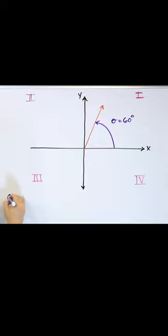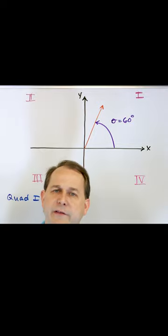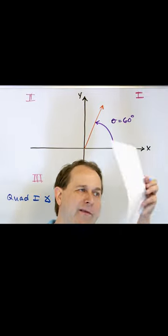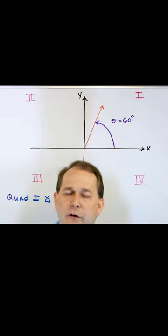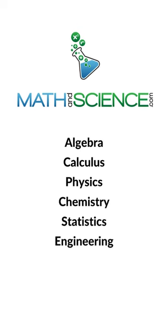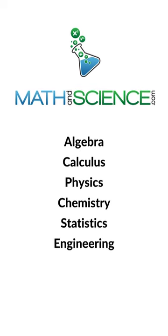So we say this is a quadrant one angle, because you're going to have some problems that'll basically say let me know what quadrant this angle is in. All you do is look and see where the line, the terminal line of the angle falls. That's the quadrant it's in.